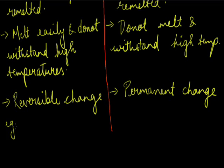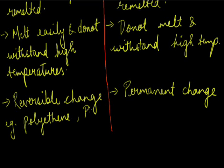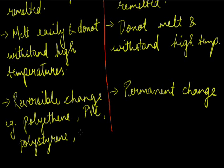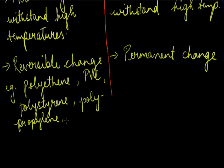Now we will also see some examples. Examples of thermoplastics are: polythene, PVC (that is polyvinyl chloride), polystyrene, polypropylene, and PET. Some examples of thermosetting plastics are: Bakelite and melamine.